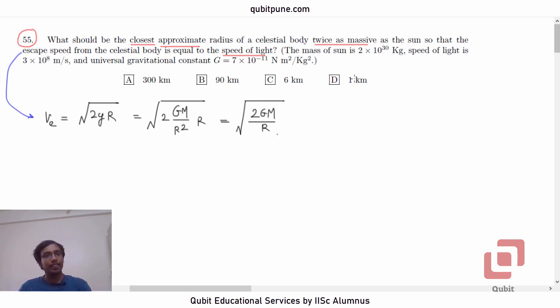Now, they are saying the escape speed from the celestial body is equal to speed of light. So v_e, they want it to be 3×10^8 m/s, that is c. So if we now substitute this value here and square, on squaring, what are we going to get?